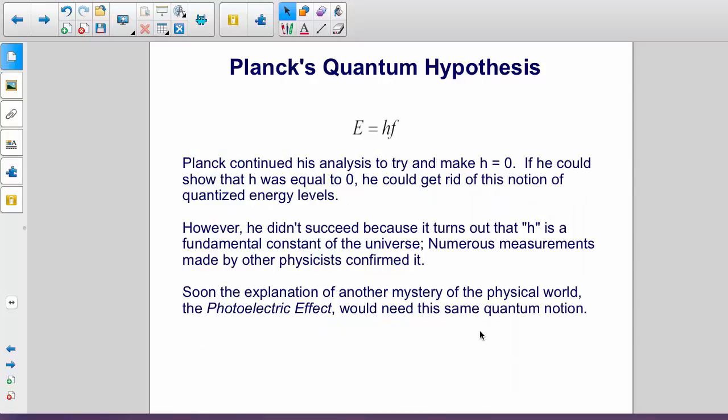Planck continued to work with his theory in the hopes of making H equal to zero. If he could, he'd be able to get rid of this idea of quantized energy levels, but he didn't succeed. And it turned out that H is a fundamental constant of the universe. In fact, numerous other measurements made by physicists have confirmed that.